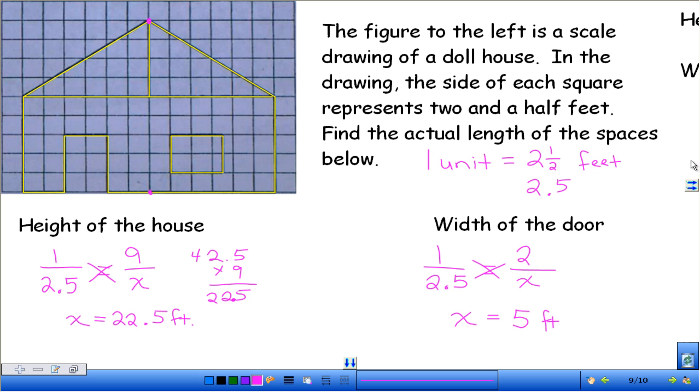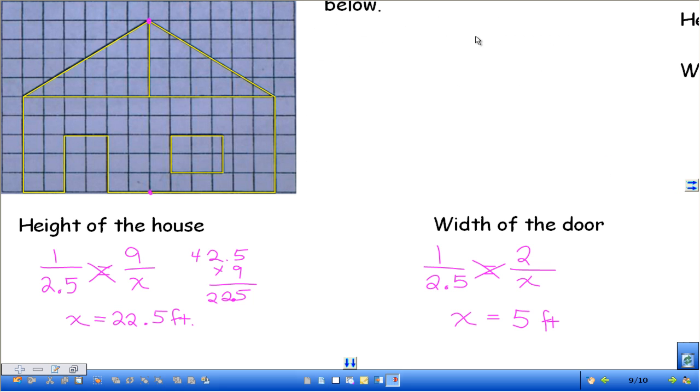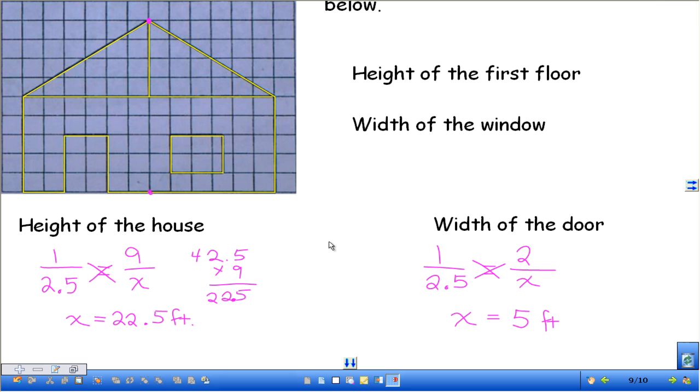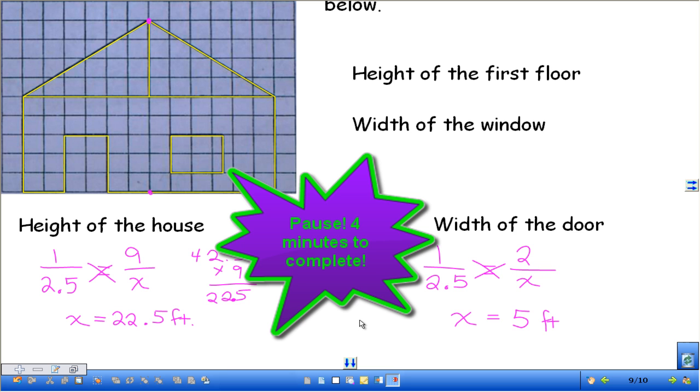I have 2 that you guys are going to do on your own. I'm going to go ahead and erase this so I can bring them out here. So go ahead and work on these 2 on your own. So the first one is the height of the first floor. So assuming from here to here is the first floor, and from here up is the attic or the second floor. And then the width of the window, so be careful here because it looks like we don't have a whole number of units. So see if you can take a second to figure those out on your own.